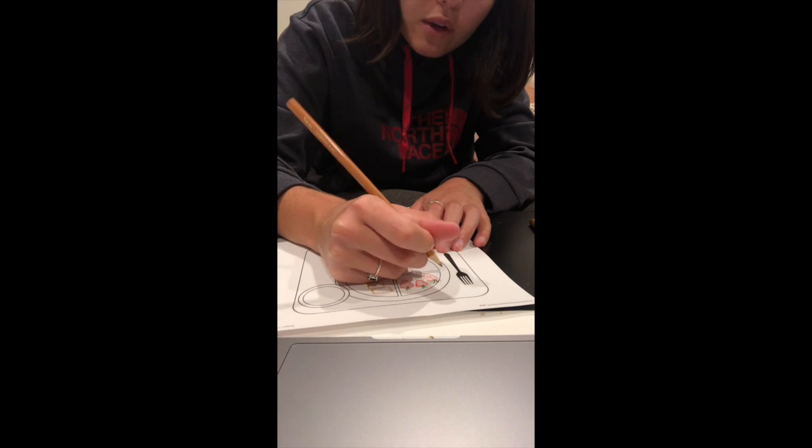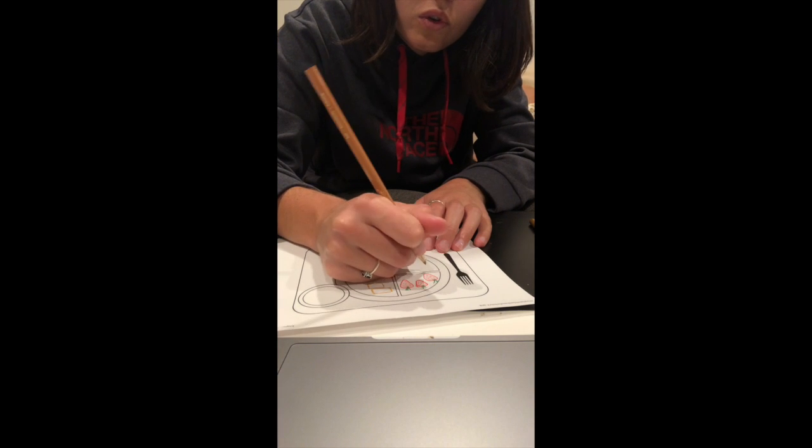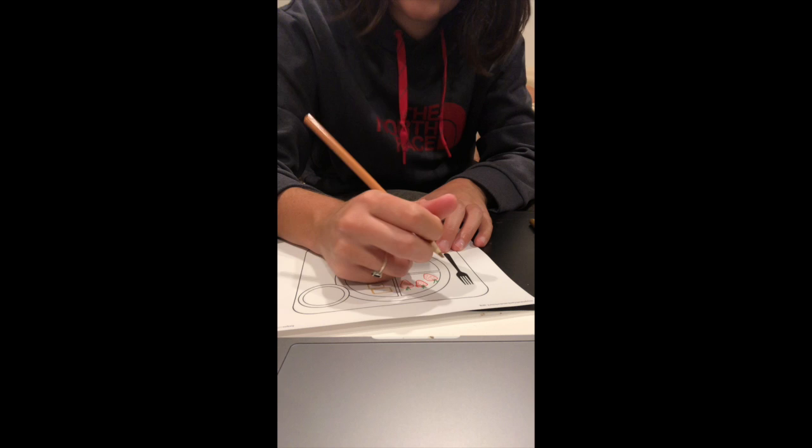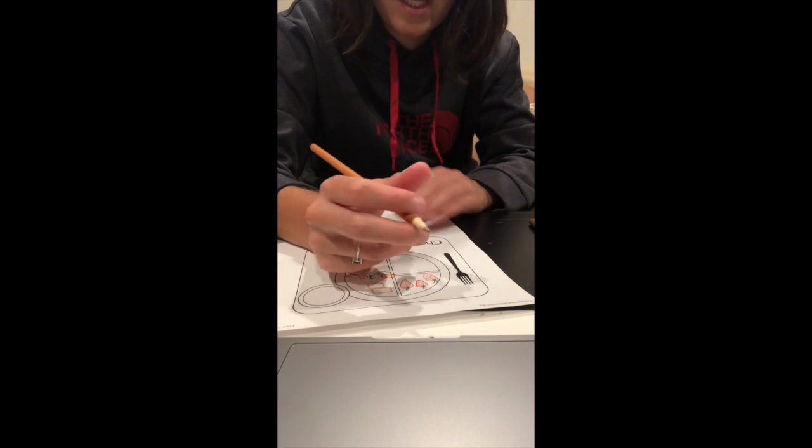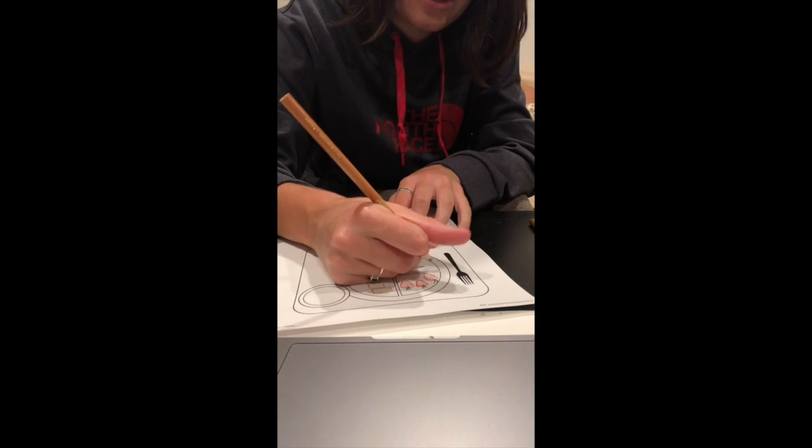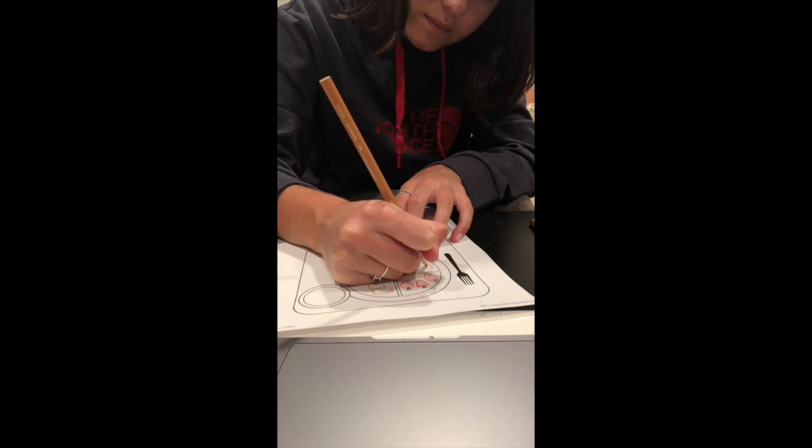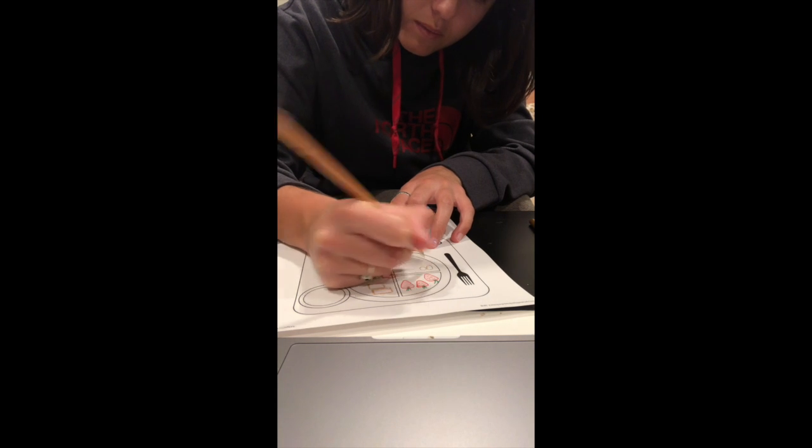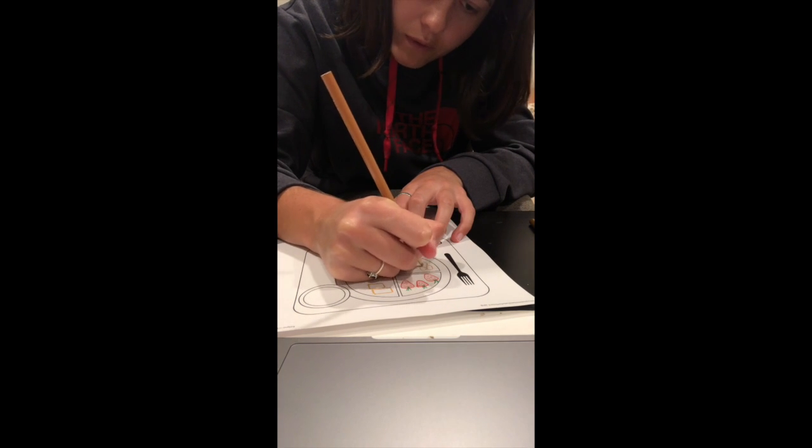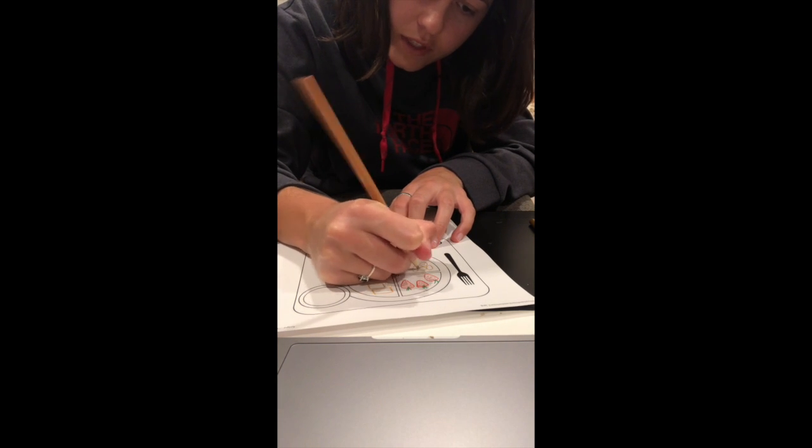So you can make potatoes look like circles, ovals, a mix between the two. Because potatoes are kind of funky shapes. So I'll do some different varieties, different kinds.